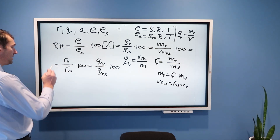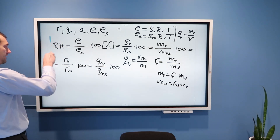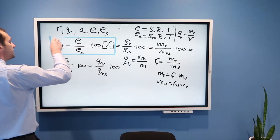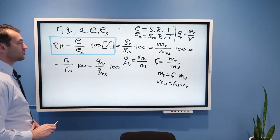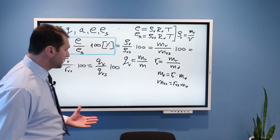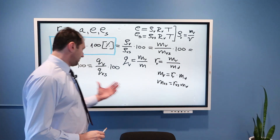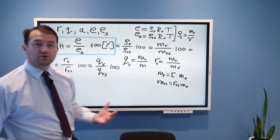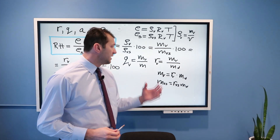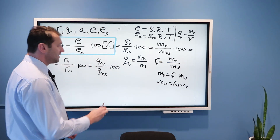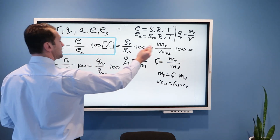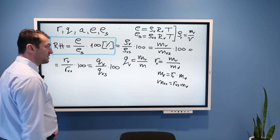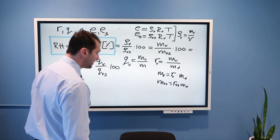In principle, the first formula — using vapor pressure — is the one most often used, but I wanted to derive the other formulas that you can use if you have quantities such as density, mass, mixing ratio, and specific humidity.